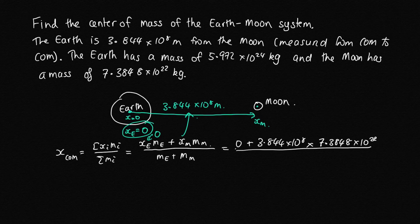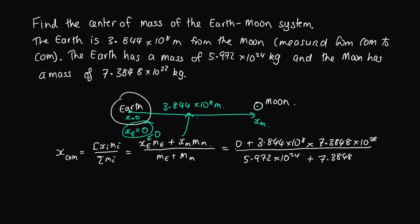Then we divide it by the total mass of the system, which is the mass of the Earth, 5.972 times 10^24, plus the mass of the Moon, 7.3848 times 10^22. You can see the mass of the Earth is almost 100 times bigger than the mass of the Moon.